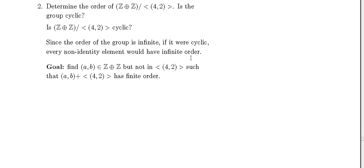So since every element would have infinite order, let's look at elements in the direct sum. We take (a,b) in Z⊕Z, but we pick an element not in the subgroup ⟨(4,2)⟩. So we need an element (a,b)+⟨(4,2)⟩ and we want to see if we can find such an element of finite order.